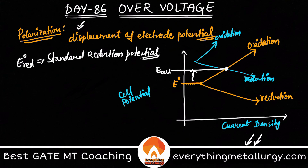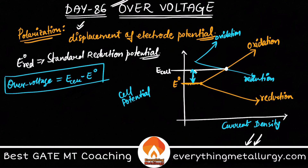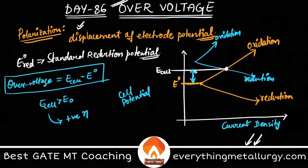So what is overvoltage? Overvoltage is the amount by which this displacement has occurred. It can be written as: eta = E_cell − E_naught. In this case, if E_cell is greater than E_naught, that is what you can see from the figure — this is a positive overvoltage. Overvoltage is usually denoted by eta.